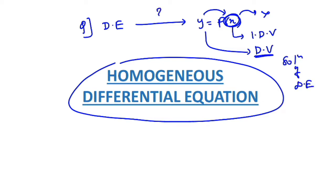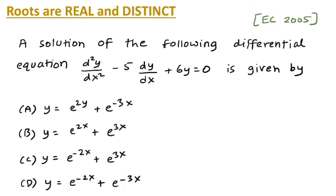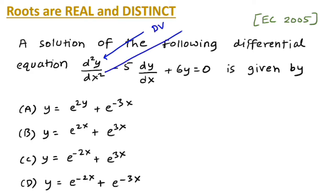Let us understand the procedure by an example. This question was asked in the Telecom 2005 GATE paper: 'A solution of the differential equation d²y/dx² − 5(dy/dx) + 6y = 0 is given by what?' We have four options. Try this yourself. Key point: y is in the numerator so it is the dependent variable, and x is in the denominator so it is the independent variable.